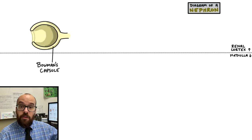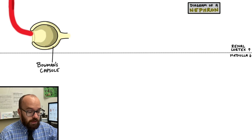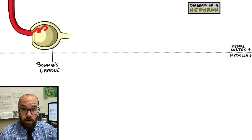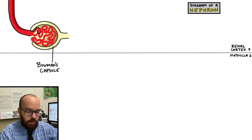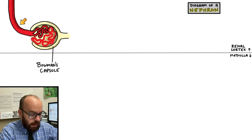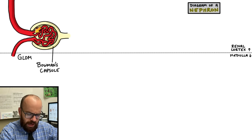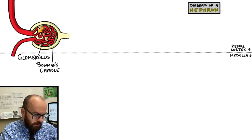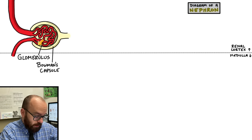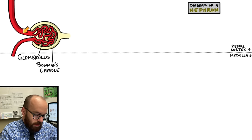Before we get into filtration, we have to deliver some blood to the nephron. We're going to have a renal artery — really a branch of the renal artery — bringing blood in. Once that renal artery gets to the Bowman's capsule, it's going to split into a couple sections and form a thin, coiled section of artery that bunches up in a ball inside the Bowman's capsule. That bunch of artery is called the glomerulus.